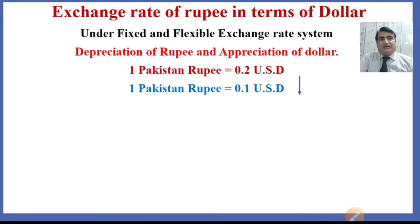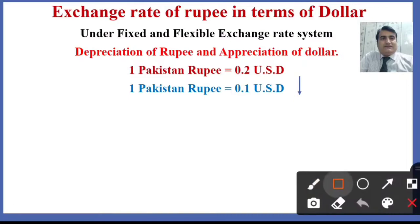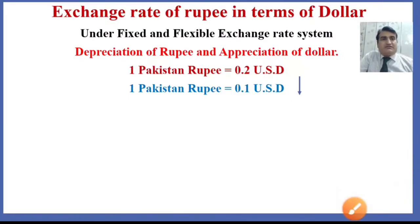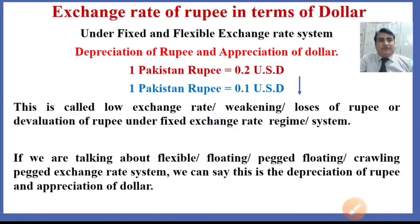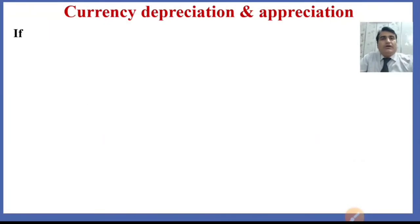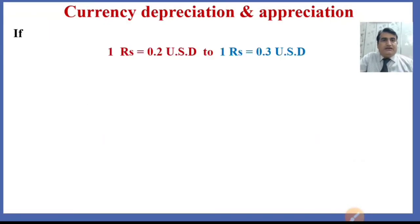Suppose the exchange rate of Pakistan rupee is 0.1 US dollar. This is a decrease in the number of US dollars required to purchase one rupee — this is called a low exchange rate, or a loss/devaluation of the rupee under a fixed exchange rate regime. Under a flexible or floating exchange rate system, we can say this is the depreciation of the rupee and appreciation of the dollar.